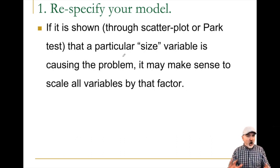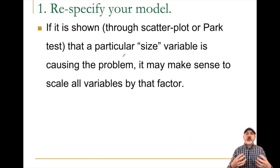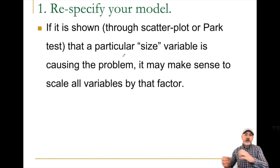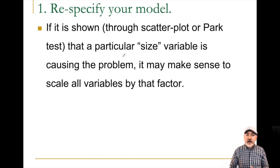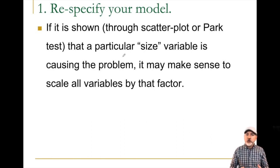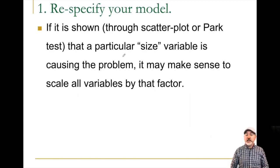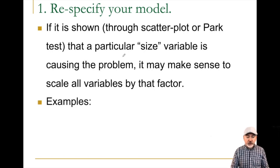Remember the concept of the most common form that heteroscedasticity takes: there is a size or scale or proportionality factor such that when that size or scale rises, the variability of our dependent variable — the variance of the error term — rises as well. If there is an obvious variable that fits that description and there is an intuitive reason to do so, we can scale our data by this size factor.